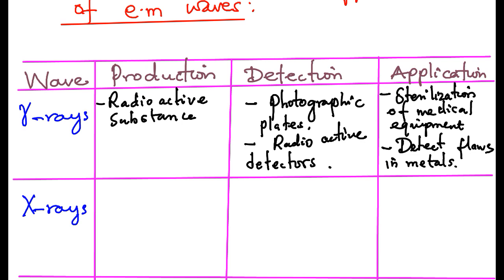The second electromagnetic wave is X-rays. X-rays are produced in X-ray tubes. We can also say that X-rays originate from the action of a beam of fast-moving electrons when it hits a target.